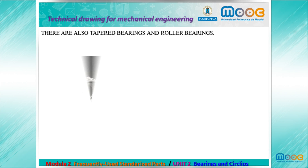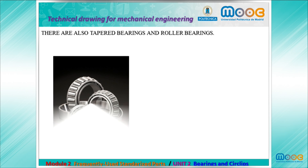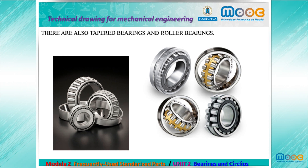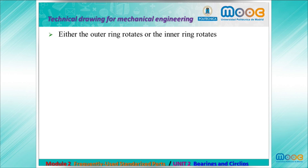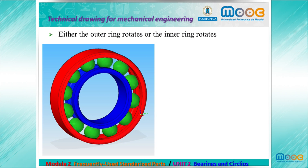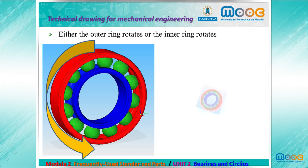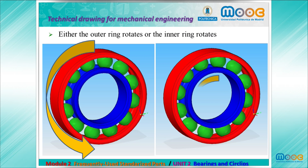There are also tapered bearings and roller bearings. Either the outer ring rotates or the inner ring rotates, but it is possible that both of them rotate, in case the hub and the shaft both rotate.